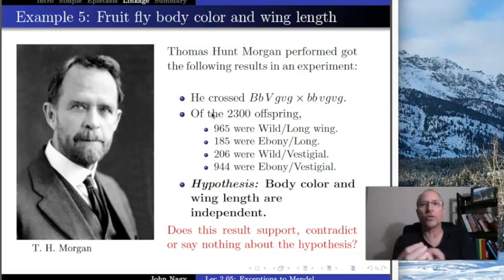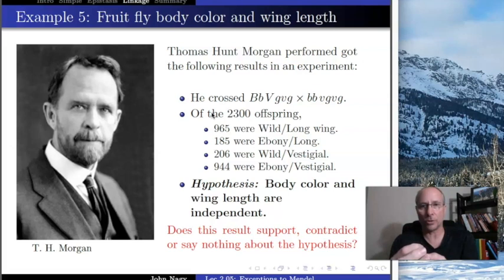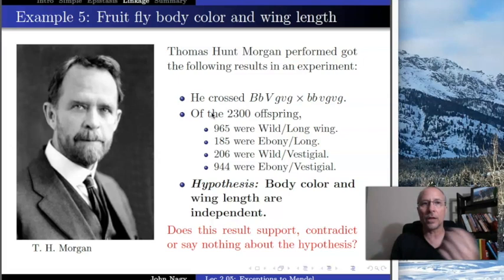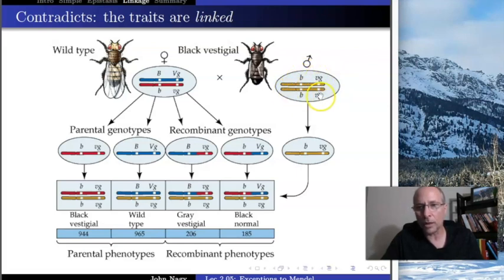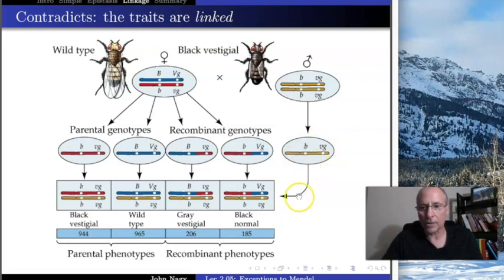So how can traits not be independent of each other? In Mendel's case, genes were on different chromosomes. What Hunt Morgan showed is that these genes are on the same chromosome — they won't segregate independently because they're physically connected together.